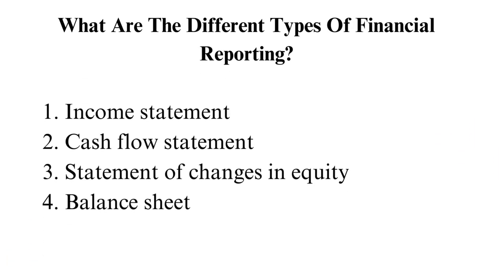What are the different types of financial reporting? There are four types of financial statements that each fulfil different functions. They are typically written in a systemic order, as the final figure obtained in T-accounts is used in another report.